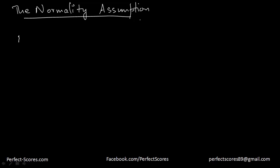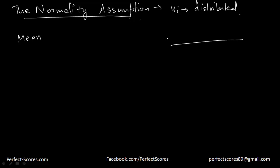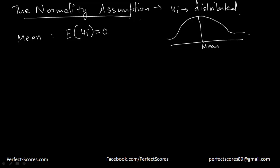What is the mean of the error term? Since ui is something which is distributed normally, this is a normal distribution where the mean value — the expected value of the error term — is supposed to be zero. Why is that? Because as the sample size increases, the error terms tend to go away. That means the mean value of the error terms is actually equal to zero. In the long run, we expect no error from our data.